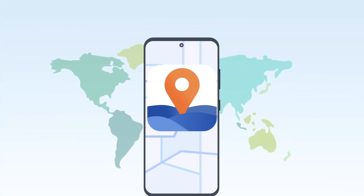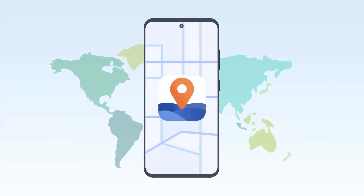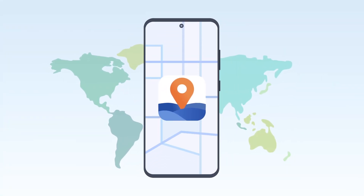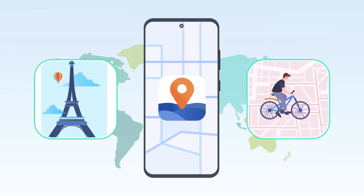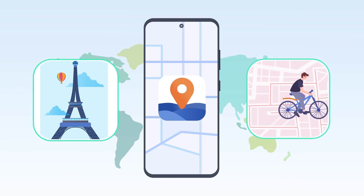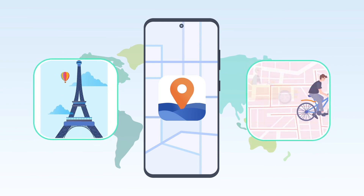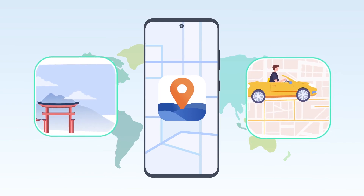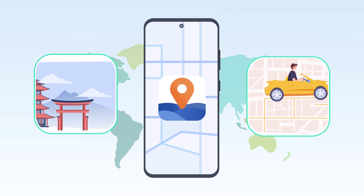Location Simulator, the Android version of Any2 app, has two main functions: modify locations and simulate real routes.